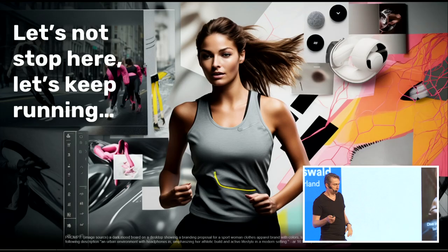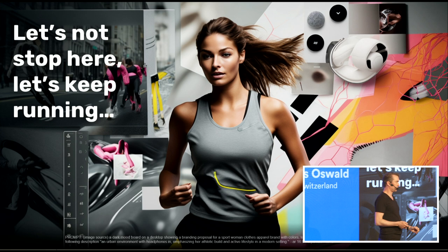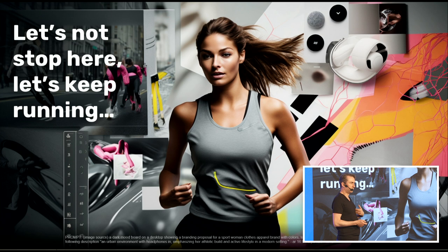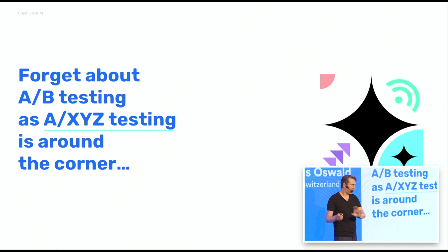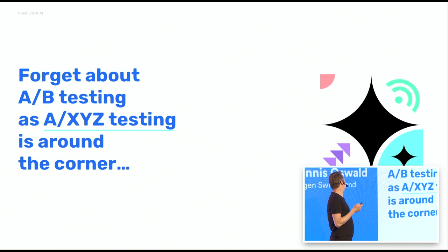And then there's a question: should we stop here? Should we keep running? Yes, we should. Because why should I do only one banner? It's not really my work to do — it's the tool's work. So forget about A/B testing where you have to hire a designer and ask for seven versions. The designer, as we know, never changes anything. Better ask the AI — she's going to do it.